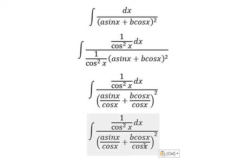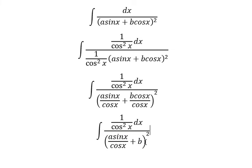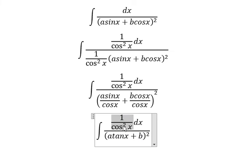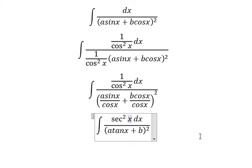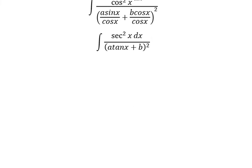Cosine x divided by cosine x will eliminate. Sine x divided by cosine x, we have tan x. This one we change to secant squared x. Next we need to use integration by substitution.